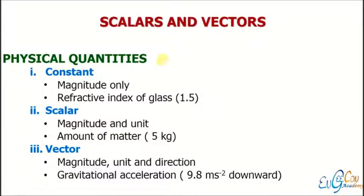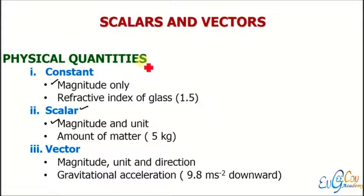Physical quantities have two main categories based on their nature: base quantities and derived quantities. These are further differentiated based on what information they need for explanation. The first category is constants, which only require magnitude. Magnitude is simply a number — this word will be used a lot in this topic.